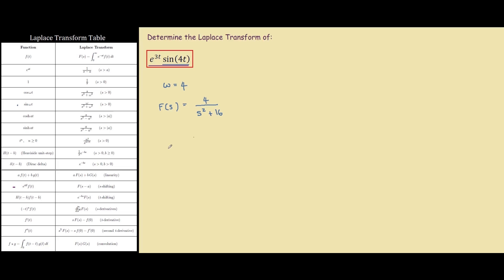So now our a is equal to 3. And you can see our function here, F, what we need to do to it is apply a shifting of s minus a.